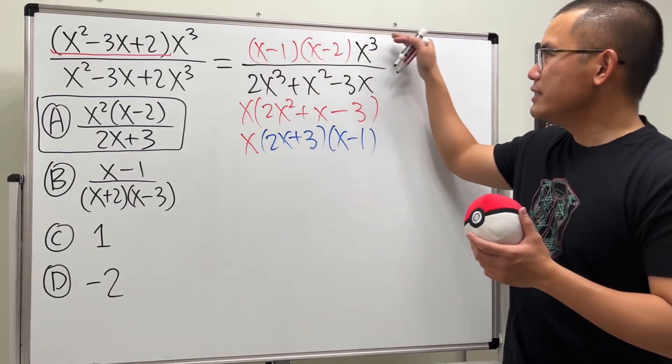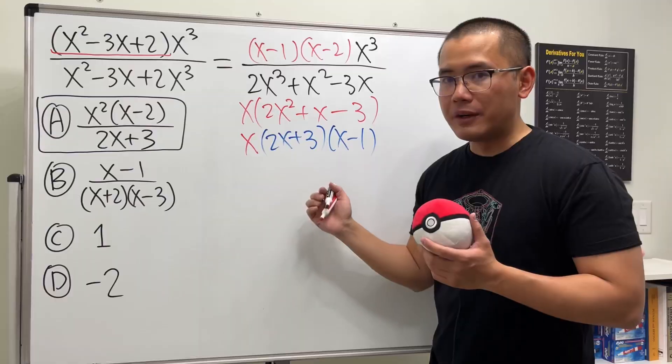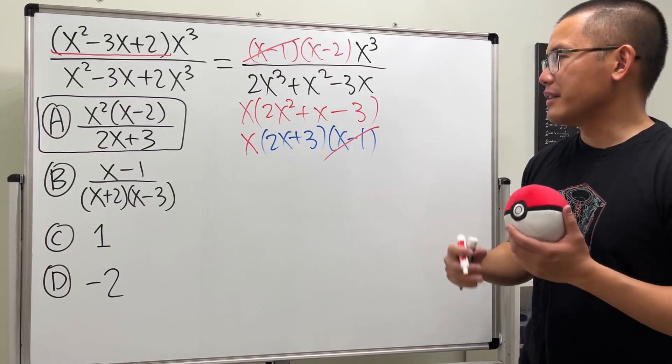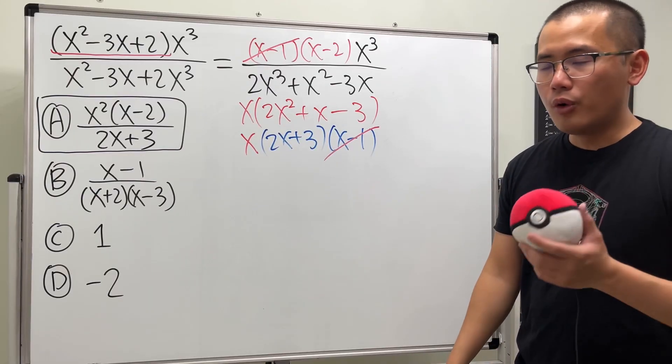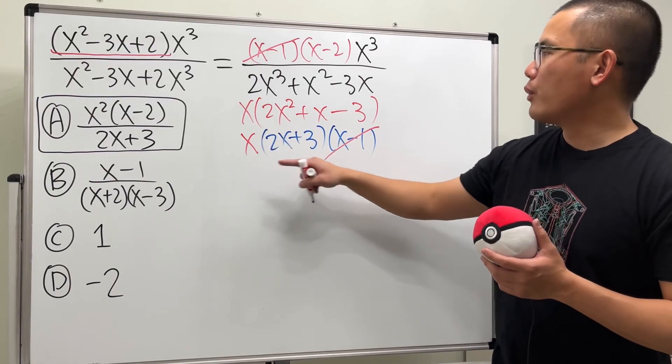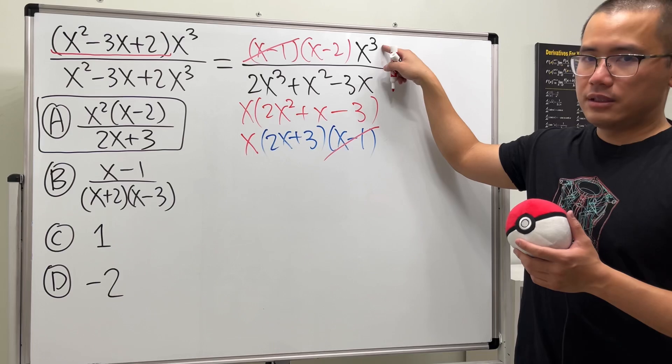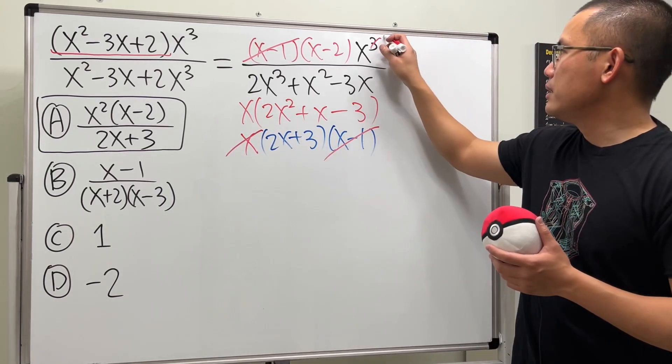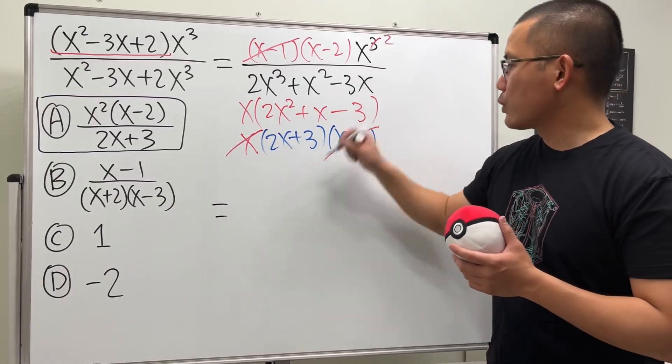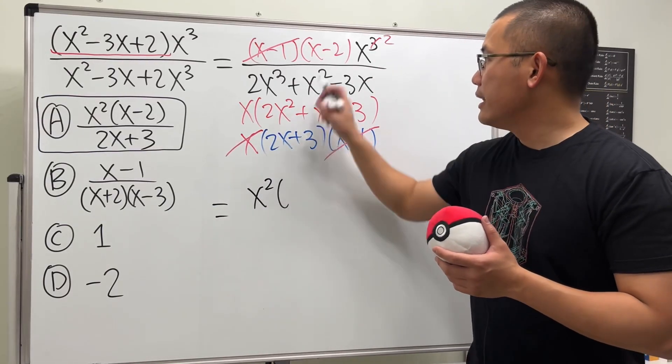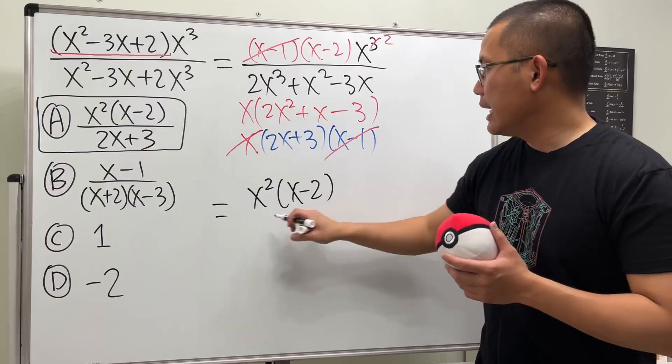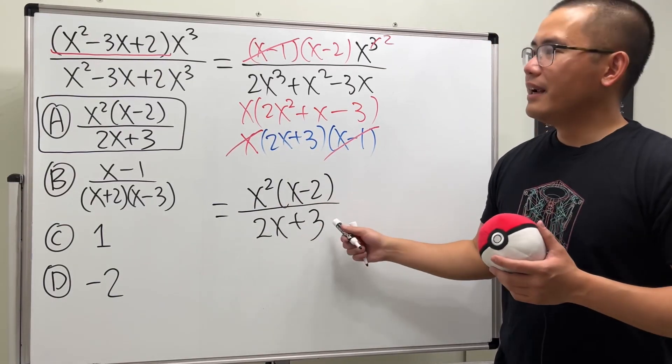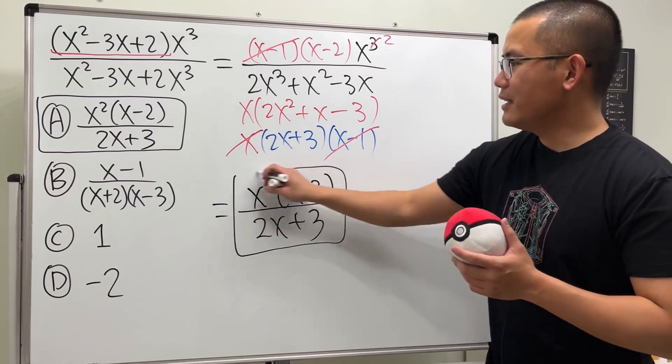This is what we have now. On the top everything is multiplying, likewise on the bottom everything is multiplying. We can cancel out this and that because they are the same factor. Moreover, here we have x¹ and here we have x³, so we can cancel one of the x's - this will be a 2. All in all, we can put x² in the front like this, and then we have (x-2) all divided by (2x+3). That's why the answer is A.